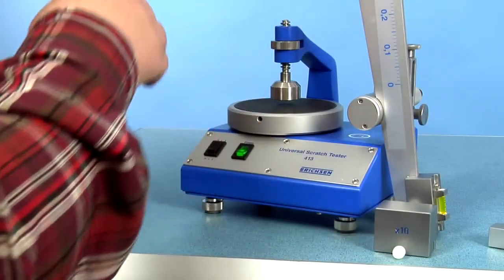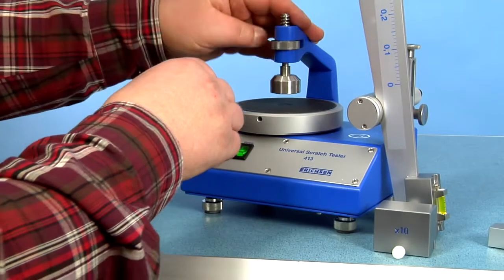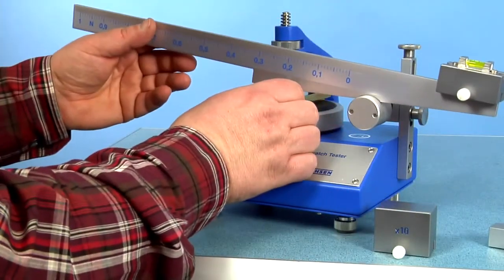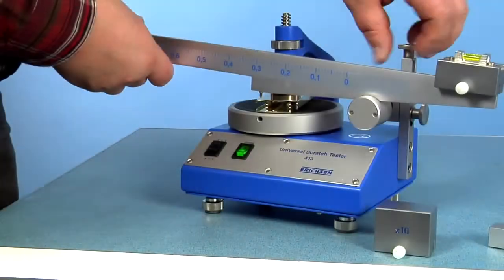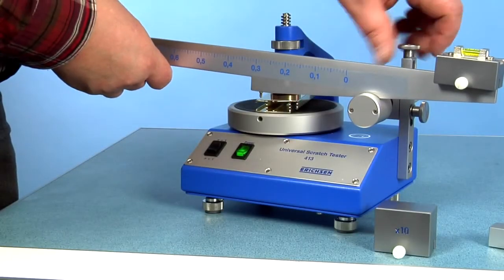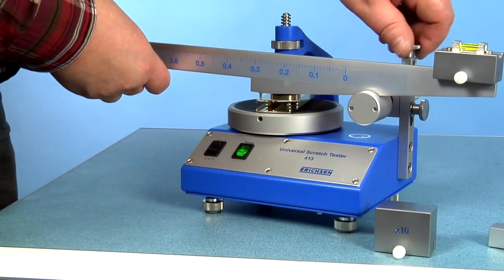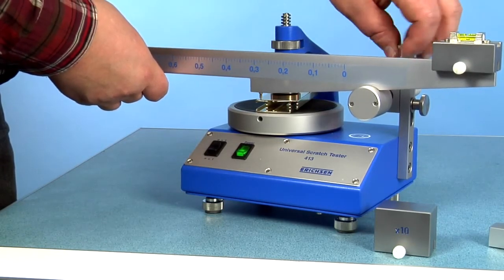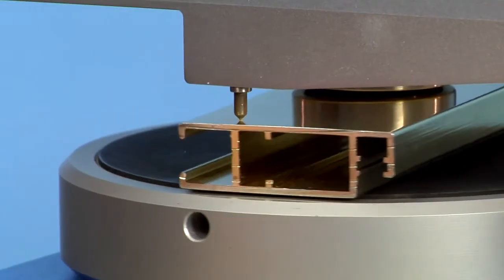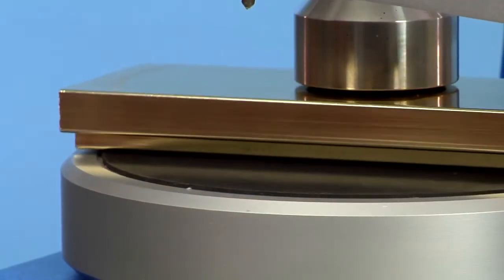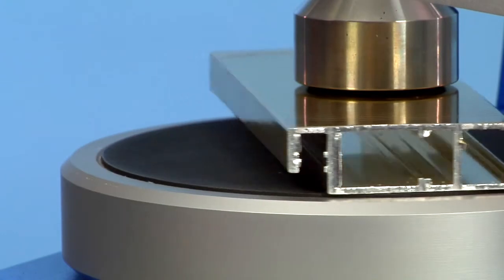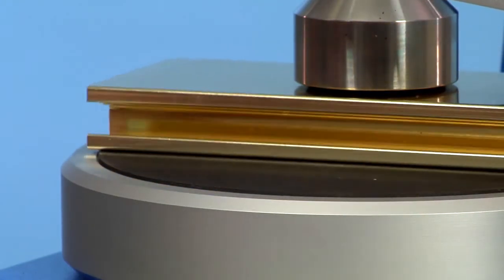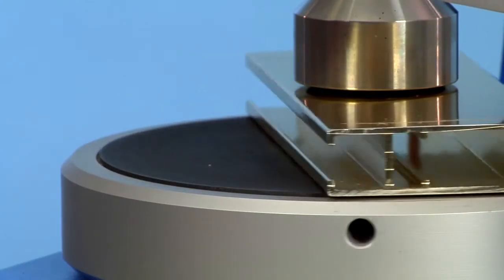For clampable samples, the performance is similar but even more convenient because there's no sample support plate necessary. The instrument is adjustable to various individual sample thicknesses.